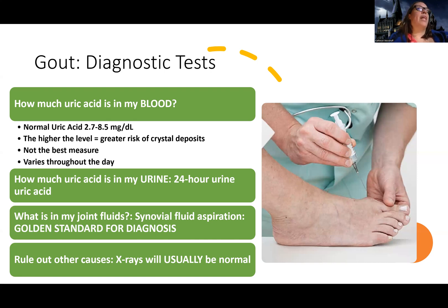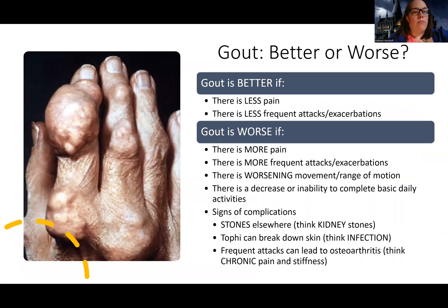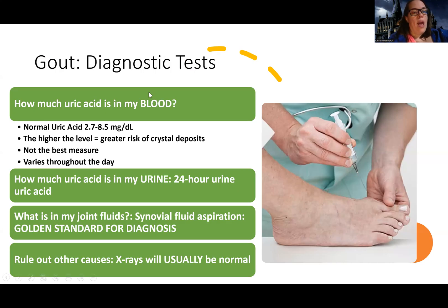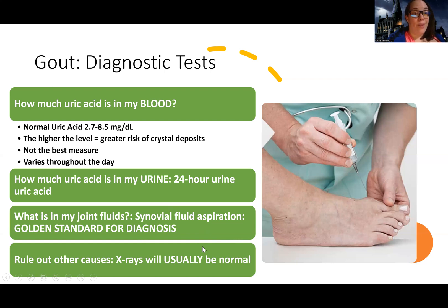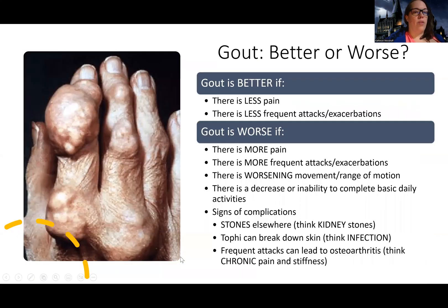We can check a 24-hour urine because that will be a better measure to see how well your kidneys are excreting uric acid, but it's still not going to be the best measure. The gold standard for diagnosis is actually to do a joint aspiration of that fluid. If we go in and there are deposits of uric acid crystals in the joints — they should not be there — if we find them in the joint space, that is a definitive 'they have gout.' We're also going to rule out other causes, just to make sure they don't have some other issue or injury.